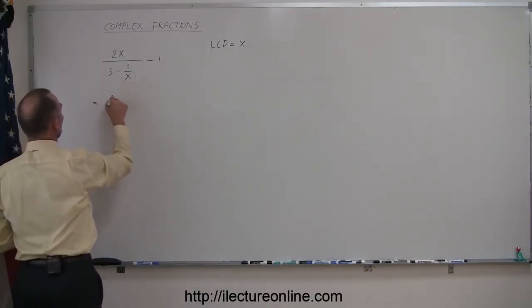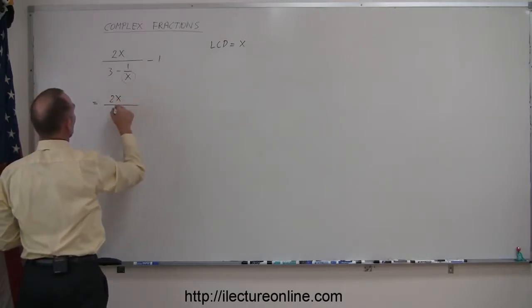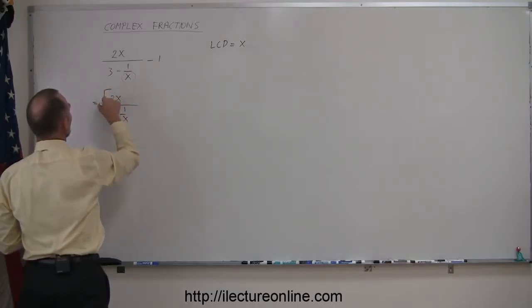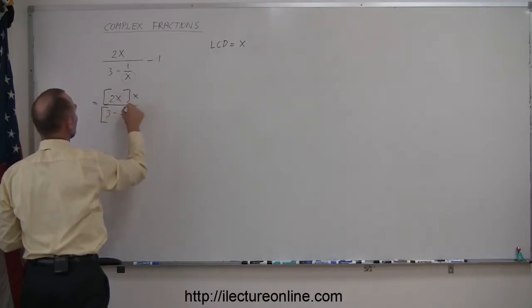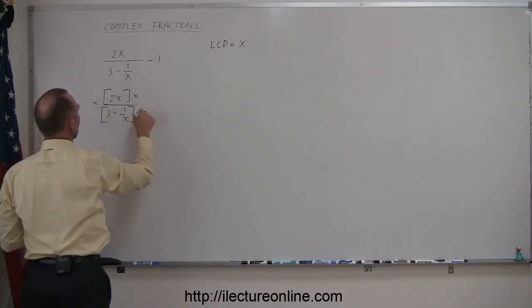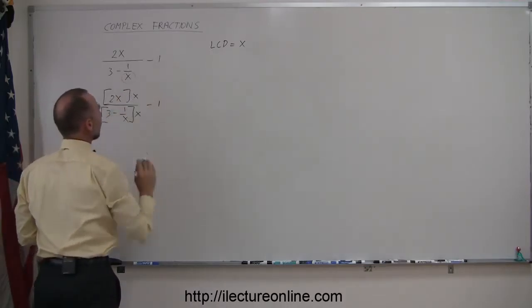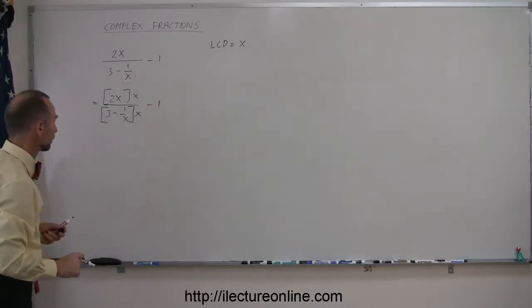I'm going to multiply the numerator and the denominator by x and see what we get. So this is equal to 2x divided by 3 minus 1 over x. I'm going to take the numerator, multiply times x, and I'm going to take the denominator and multiply times x, and I still have the minus 1 there that I leave untouched for now.